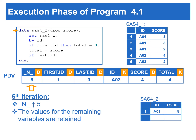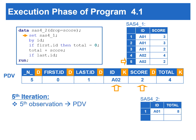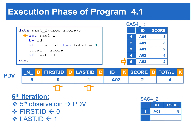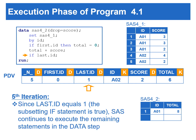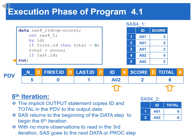At the beginning of the fifth iteration, _N_ is incremented to 5 and the rest of the variables are retained. The set statement copies the fifth observation from the input data to the PDV. First.id is set to 0 since this is not the first observation for A02. But last.id is set to 1 since this is the last observation for A02. Since first.id does not equal 1, there is no execution. Total is accumulated. Since last.id equals 1, SAS continues to execute the remaining statements in the data step. The implicit output copies the contents from the PDV to the output data. SAS returns to the beginning of the data step to begin the sixth iteration, and since there are no more observations to read, SAS goes to the next data or proc step.